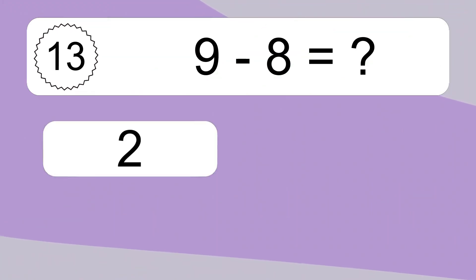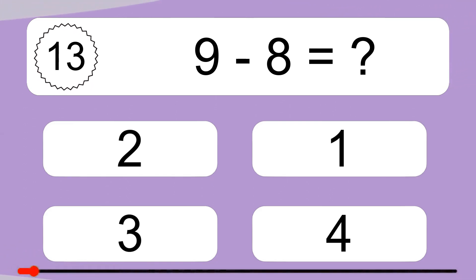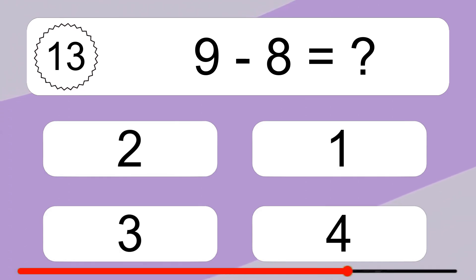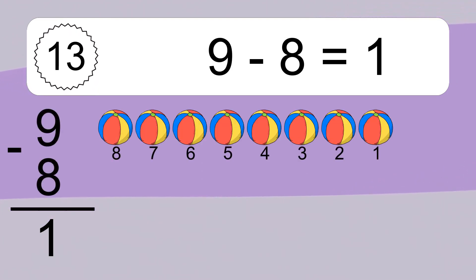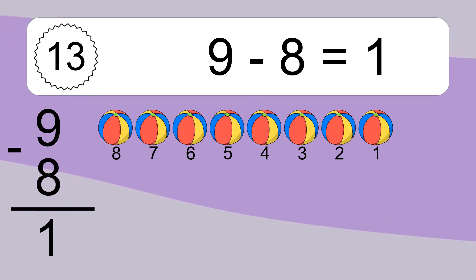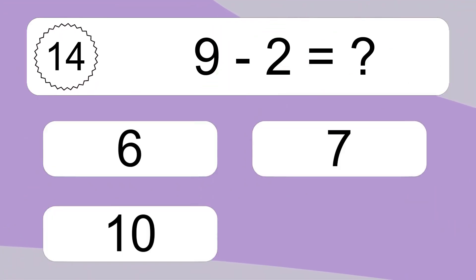9 minus 8 equals what? 9 minus 8 equals 1. Let's count it. 8, 7, 6, 5, 4, 3, 2, 1.